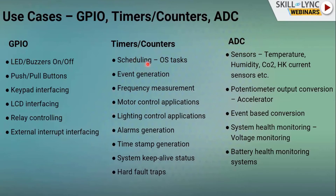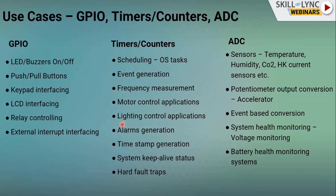Timers and counters are used for task scheduling — defining whether a function runs in a 1ms or 10ms routine. They are used for event generation (periodic or non-periodic), frequency measurement, motor control via PWM, and lighting control applications such as traffic lights — turning green on for a set duration and then switching to red.